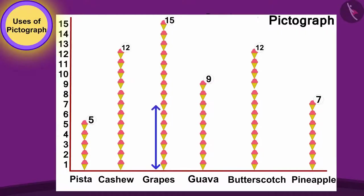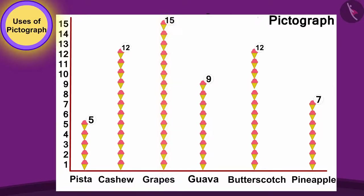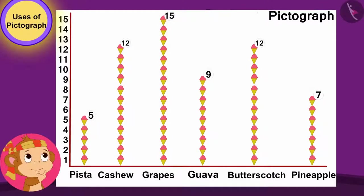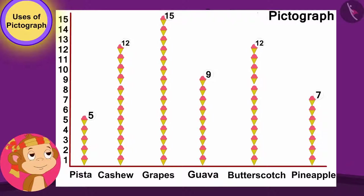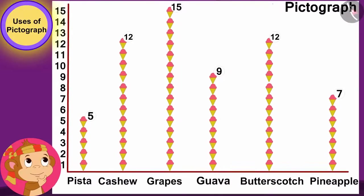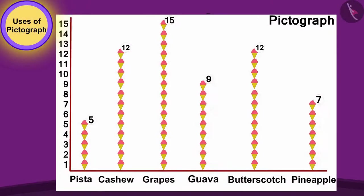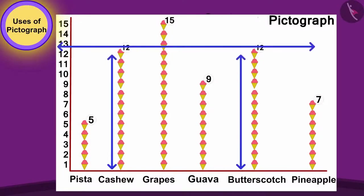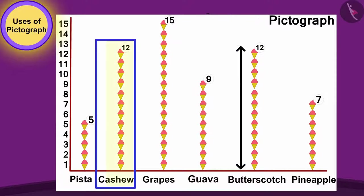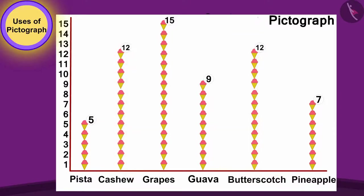Yes, the grape ice cream line is the tallest, so we can easily find out that grape ice cream is liked by most people. Now, Babban looked at the pictograph once again and thought these two ice creams have been liked by exactly the same number of people. Children, can you find out which two ice creams Babban is thinking about? Cashew and butterscotch ice cream lines are of the same height. Therefore, the number of people who like cashew and butterscotch ice cream is the same.